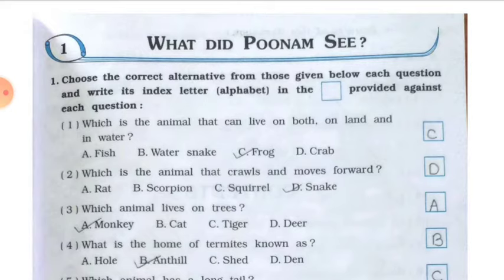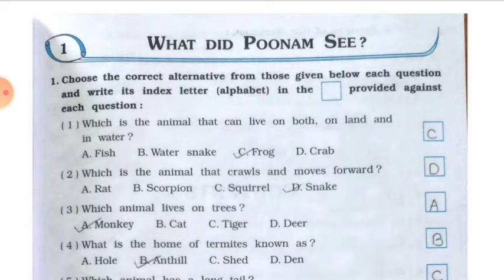We have been given many MCQs. We have to select the correct option and write the correct alphabet in the box provided. So let's start. Number one: which is the animal that can live both on land and in water? The correct answer is C — frog. So we write C in the box.